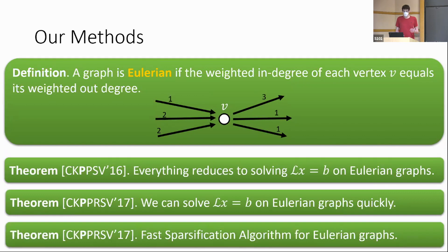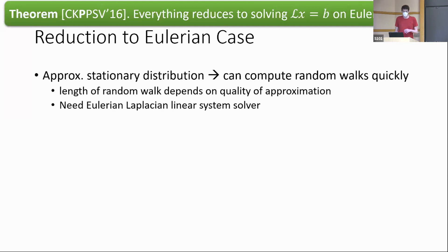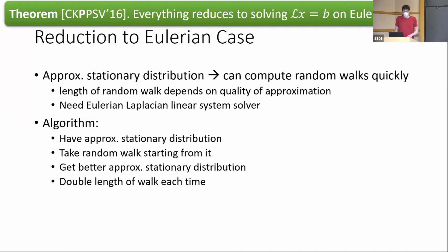To do that, we leverage a sparsification algorithm for Eulerian graphs that's fast. The reduction to the Eulerian case works roughly as follows: if you have an approximate stationary distribution, this lets you take random walks quickly — the length of those random walks depends on the quality of the approximation. You use an Eulerian Laplacian linear system solver, take random walks, and from those walks get a better approximate stationary distribution. This essentially lets you double the length of walks each time, so in roughly logarithmically many applications of an Eulerian Laplacian system solver, you can solve Laplacian linear systems for general graphs.